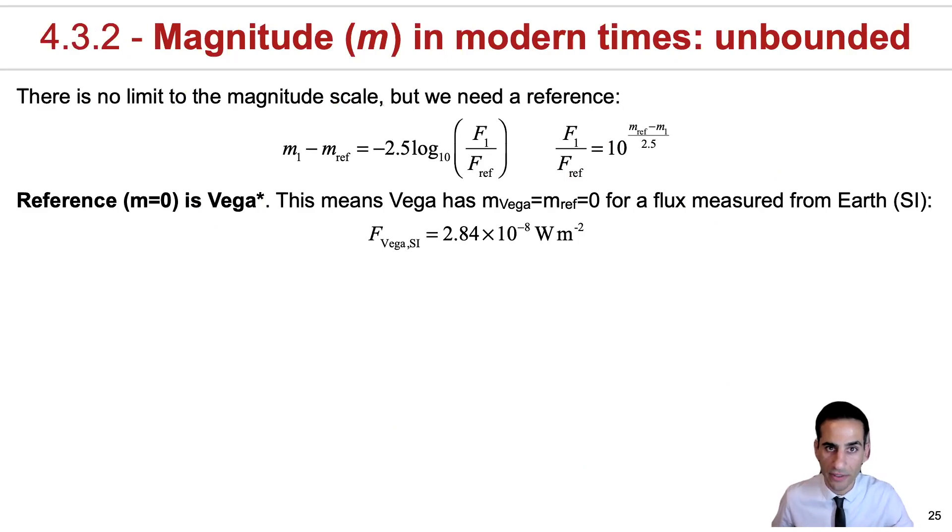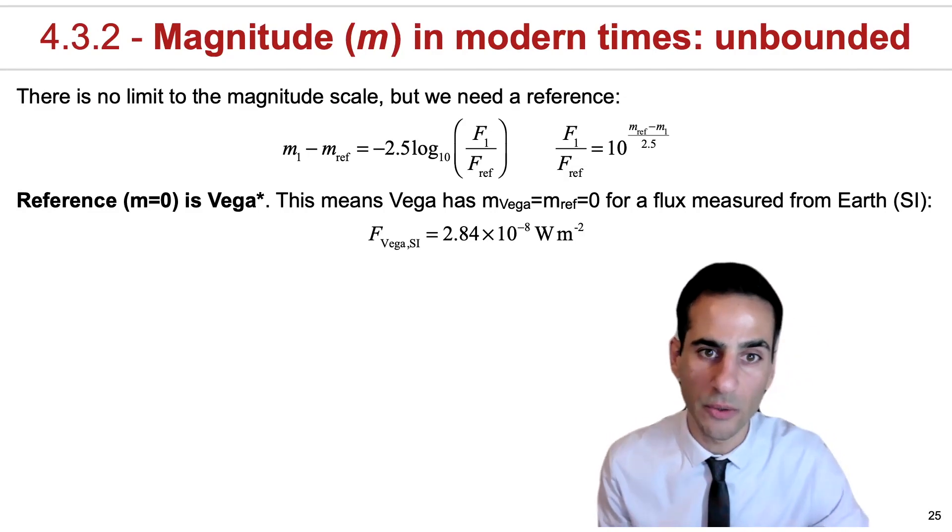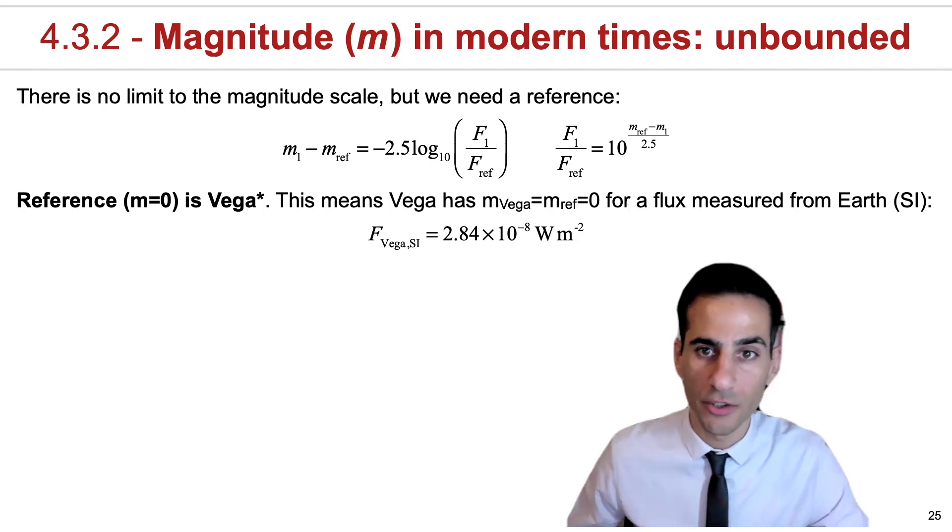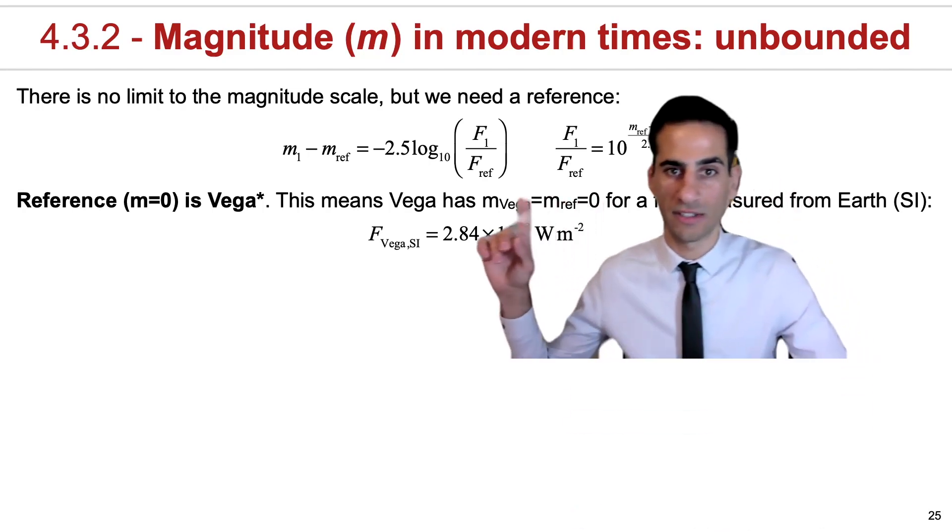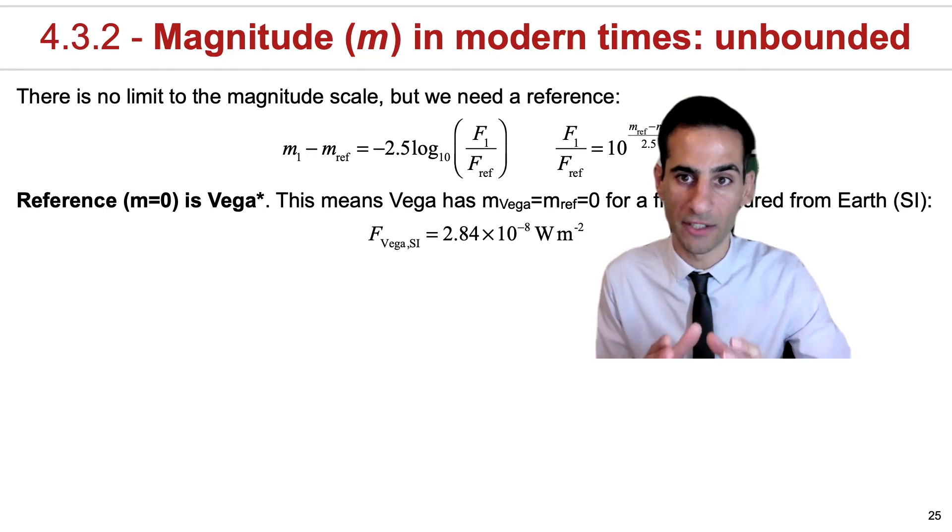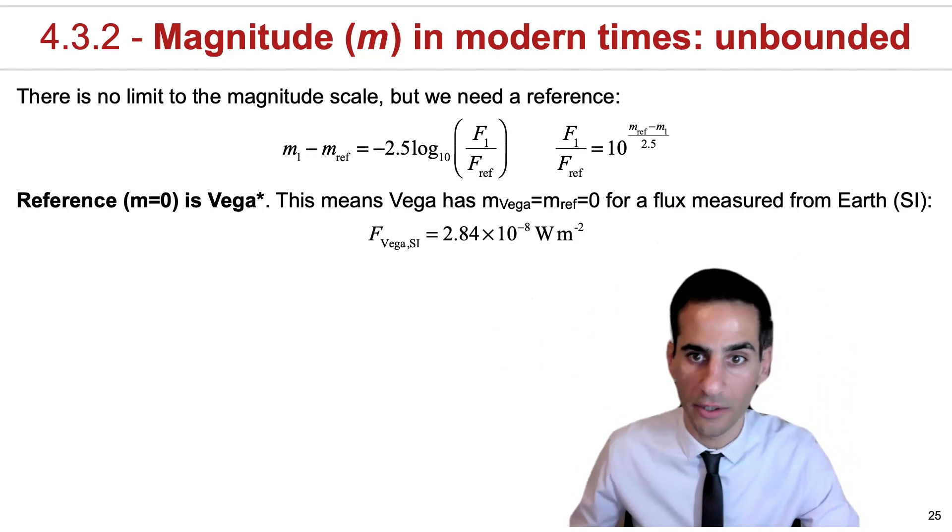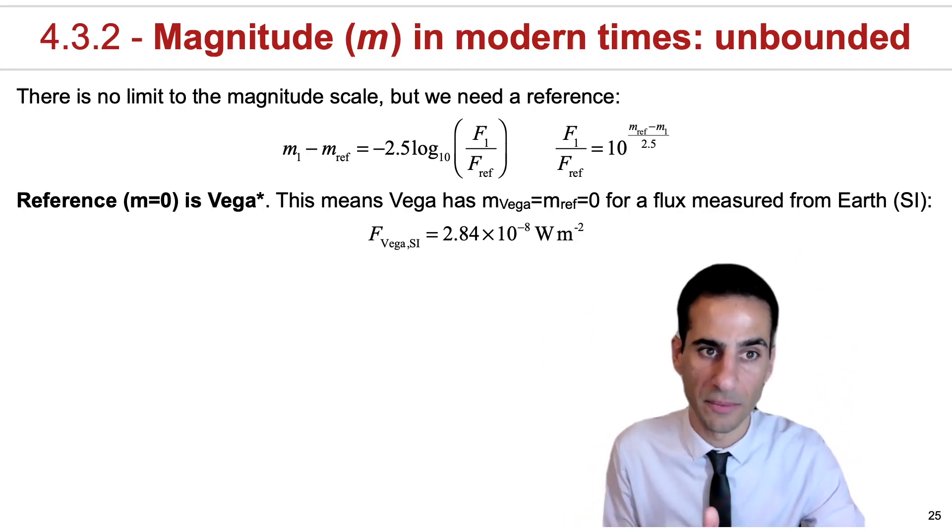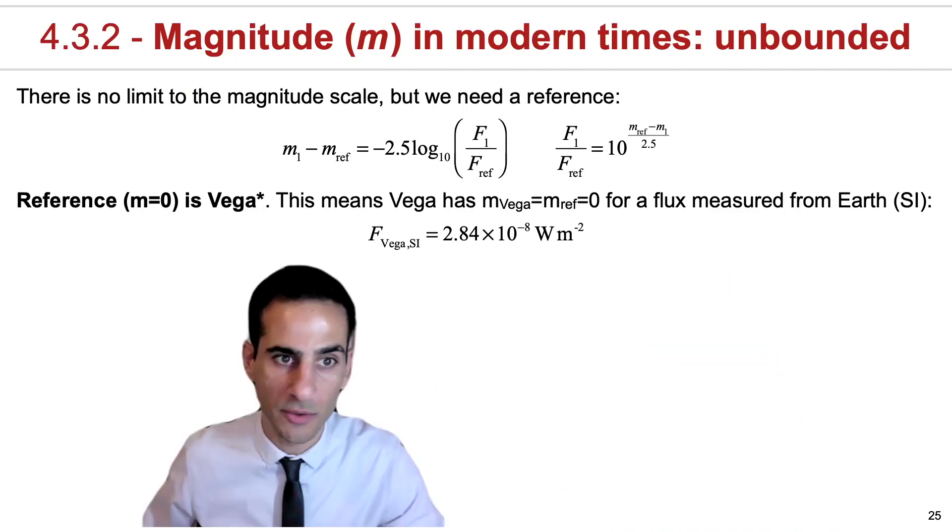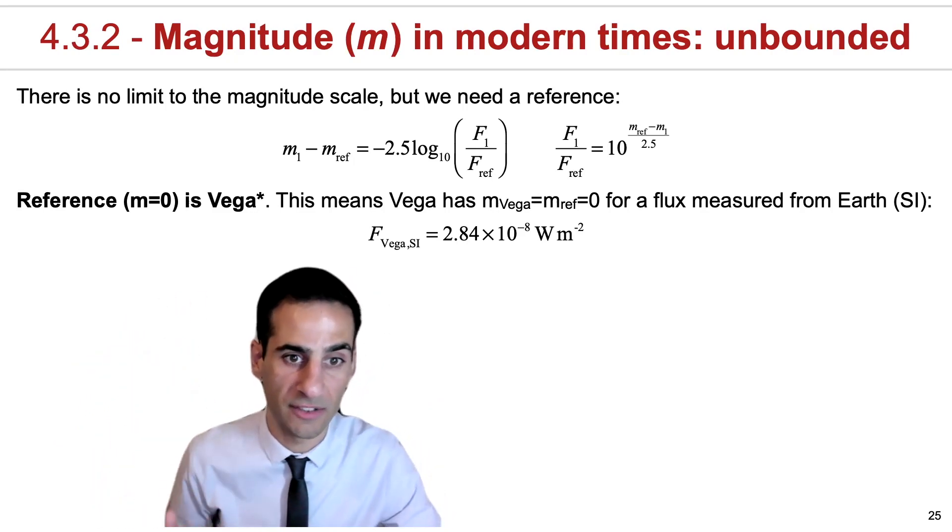Because of all this, it is important to define magnitudes in the modern way. One of the systems that we're going to use, nicely defined also in the international system, is to use the equation as we've seen before. So this is still the definition: the magnitude 1 minus reference magnitude will be equal to minus 2.5 log 10 of the ratio of the fluxes. Our reference for this system, which is called the Vega system, is the star Vega.